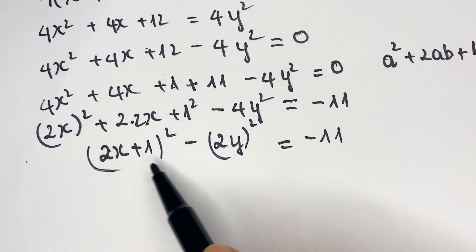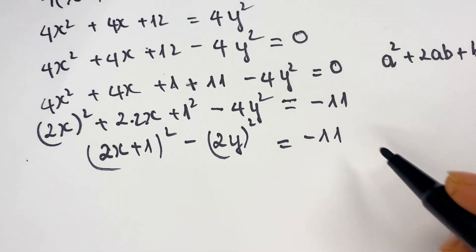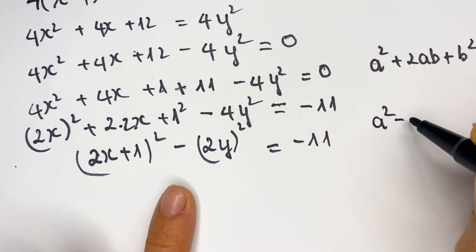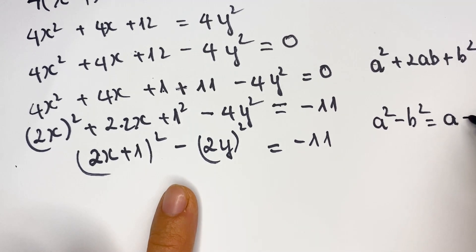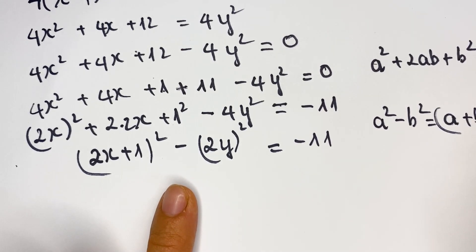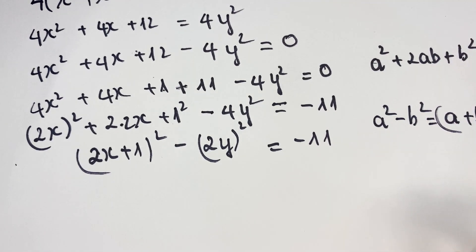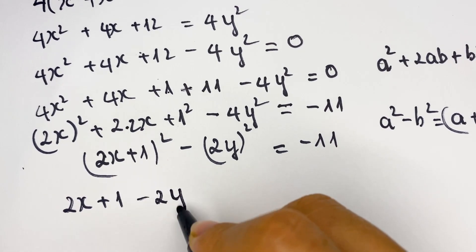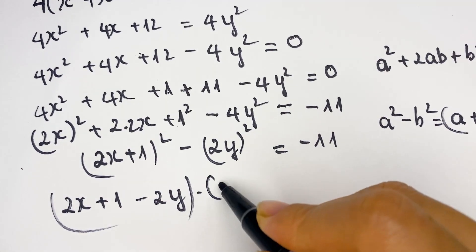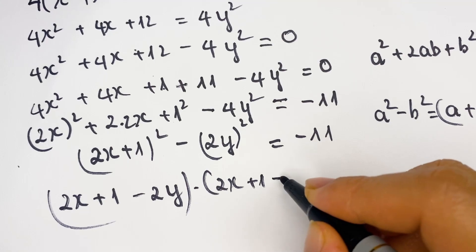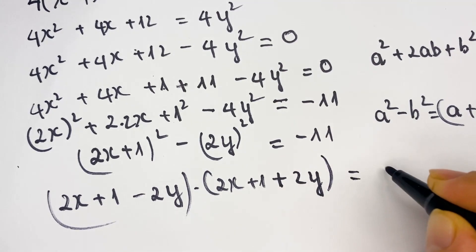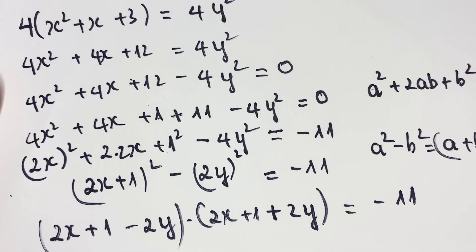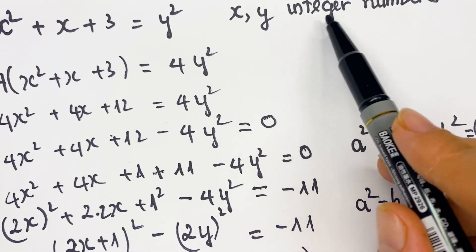You can see something here — this is the difference of squares. So therefore, a squared minus b squared equals (a plus b)(a minus b). Here, we apply that to get (2x plus 1 minus 2y)(2x plus 1 plus 2y) equals negative 11.